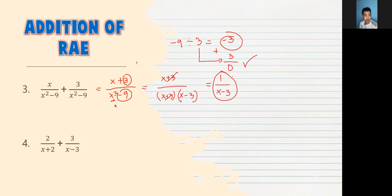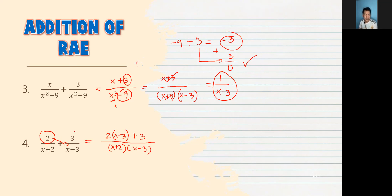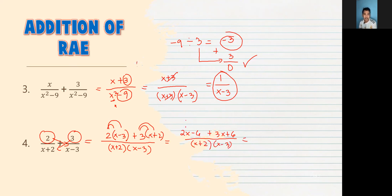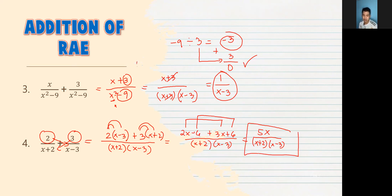Now with different denominators: copy both denominators — X plus 2 and X minus 3 — and join them. Yung 2, imultiply sa ka-opposite niya (X minus 3), plus yung 3 imultiply sa kadiagonal na X plus 2. Distribute: 2X minus 6 plus 3X plus 6, all over (X plus 2)(X minus 3). Combine like terms: 2X plus 3X is 5X, negative 6 plus 6 is 0. Final answer: 5X over (X plus 2)(X minus 3).